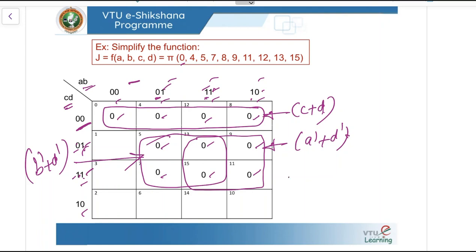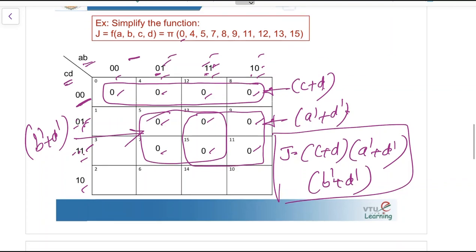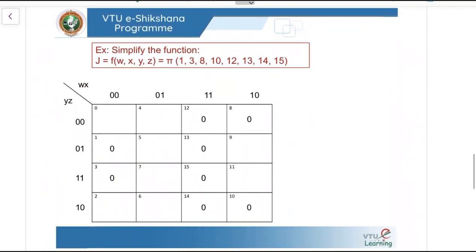The final expression is J equals (C or D)(A-bar or D-bar)(B-bar or D-bar). This is the final simplified expression for the 4-variable K-map. Let us see one more example.